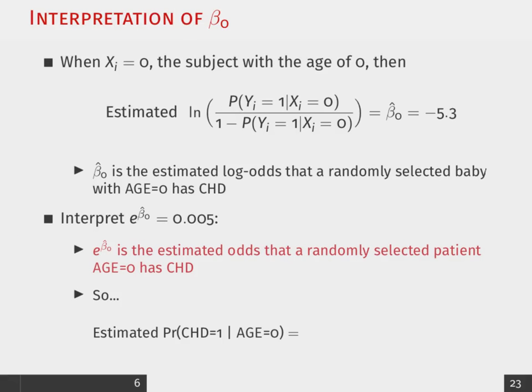So, if we're trying to actually figure out what is the estimated probability that a patient at age 0 has CHD, well, again, that is equal to the probability that y equals 1 when x equals 0.